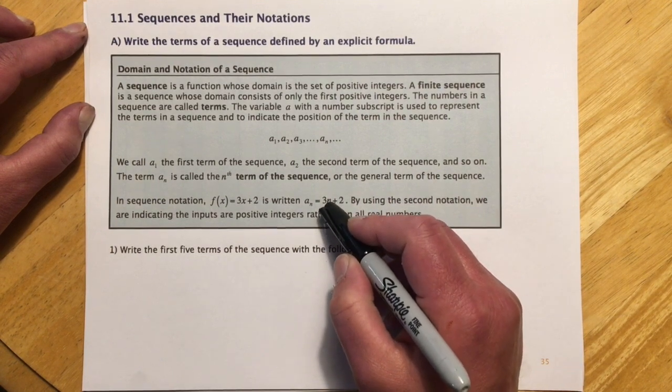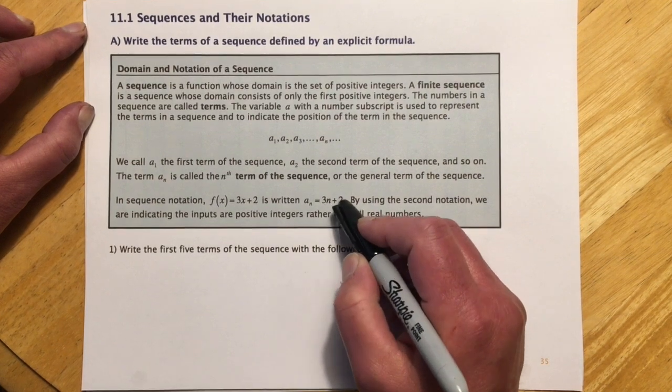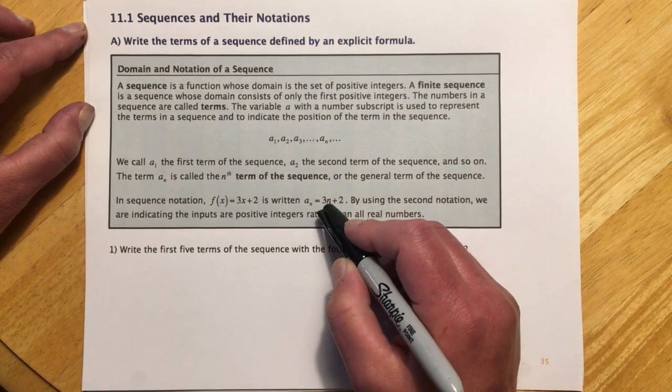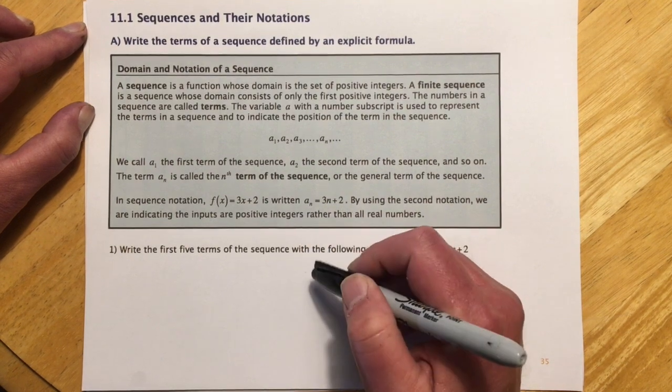And so in this one, you can see, if n was 1, the first term would be 5. If n was 2, 3 times 2 plus 2, the second term would be 8.